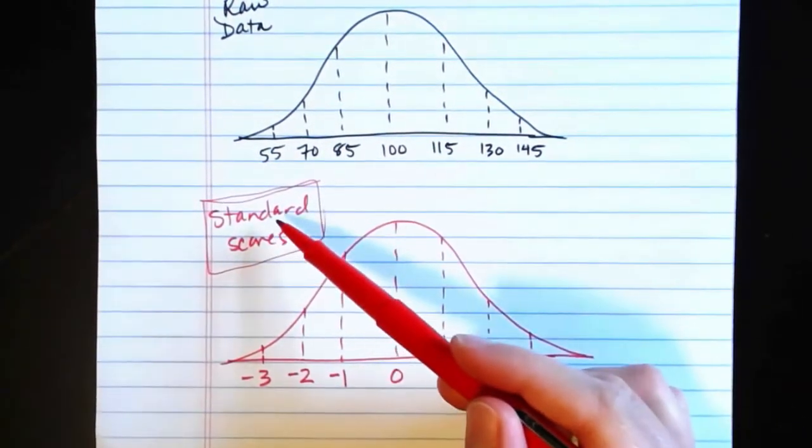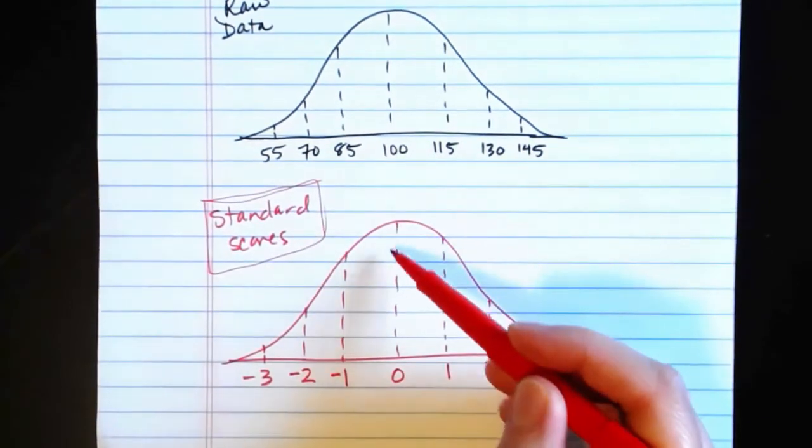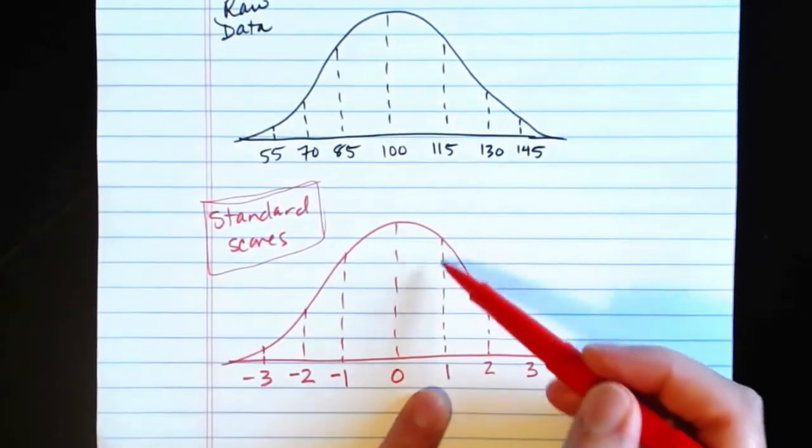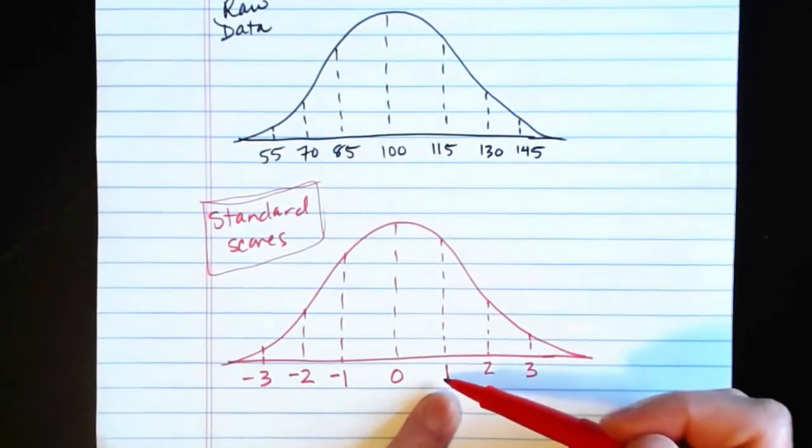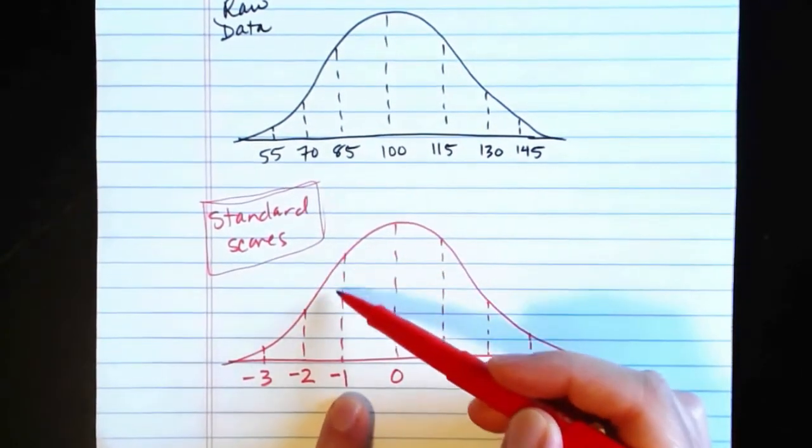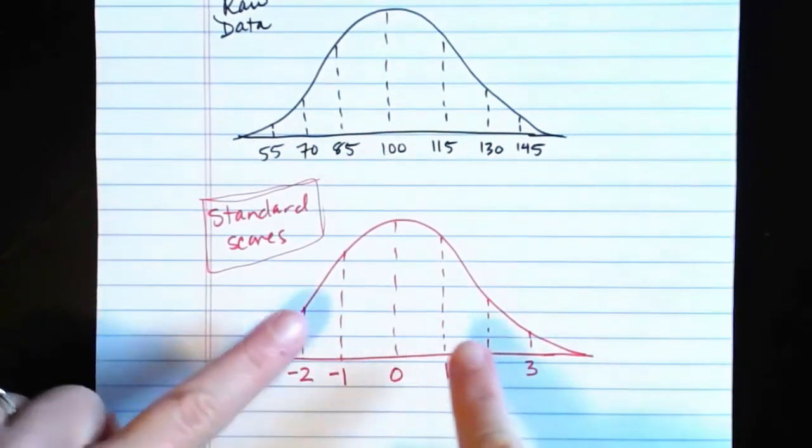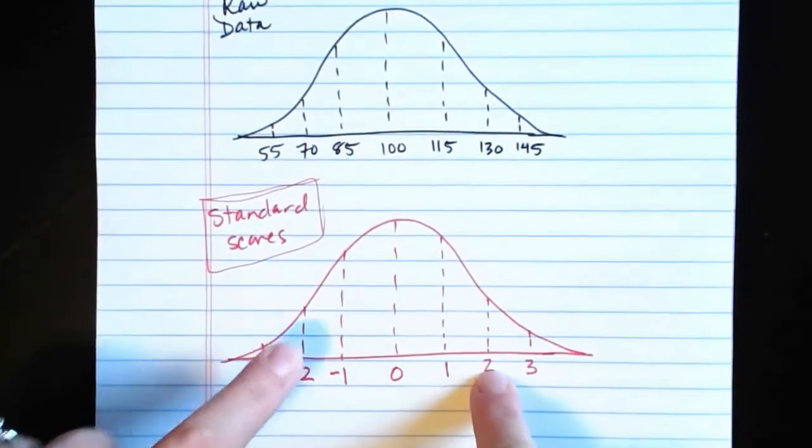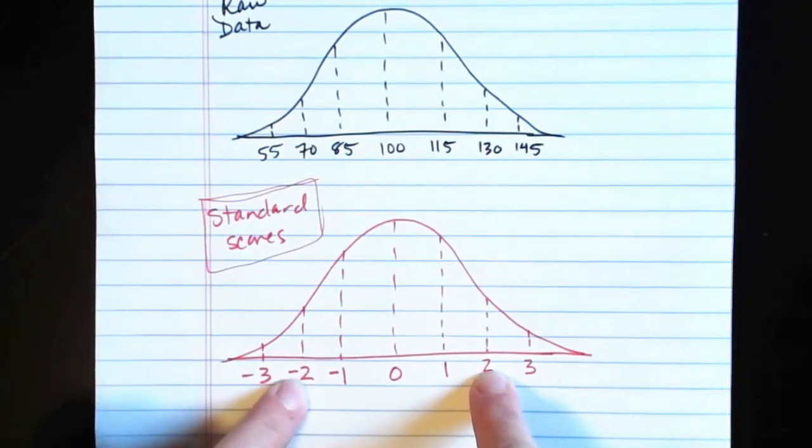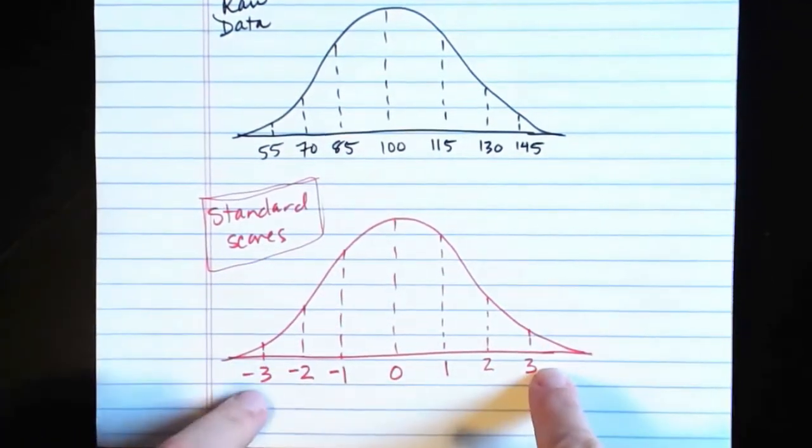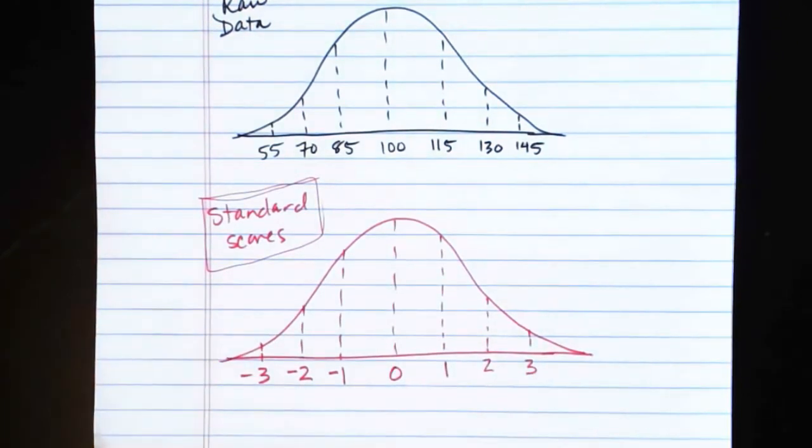That's why it's called the standard normal curve. It is centered at 0, and one standard deviation above the mean is represented by a positive 1. One standard deviation below the mean is represented by negative 1. Similarly, two standard deviations on either side of the mean are designated with positive 2 and negative 2. Three standard deviations on either side of the mean, positive 3 and negative 3.